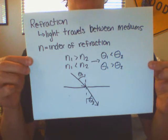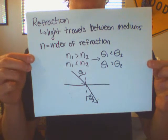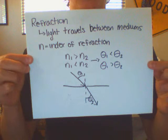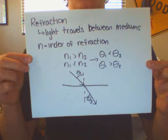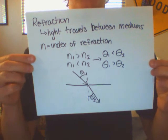When the initial index of refraction is less than the secondary medium's index of refraction, then the initial angle to the normal will be greater than the resultant angle to the normal.